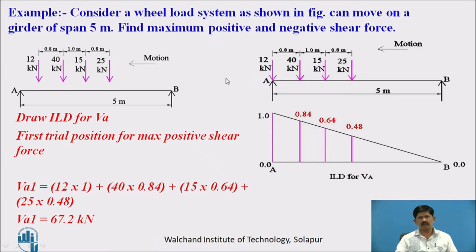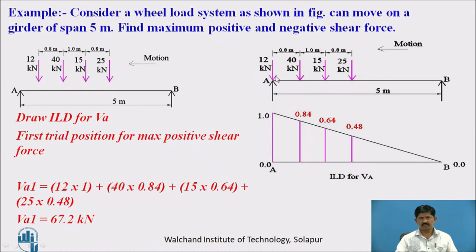We will now consider an example: a wheel load system moves from B to A of a span of 5 meters. The wheel loads and spacings are given — distances of 0.8 m and 1 m between wheels. We need to find the maximum positive and negative shear force. In Trial 1, W1 is placed exactly at A and the ILD ordinates are calculated using similar triangles. VA1 = 12×1 + 40×0.84 + 15×0.64 + 25×0.48 = 67.2 kN.